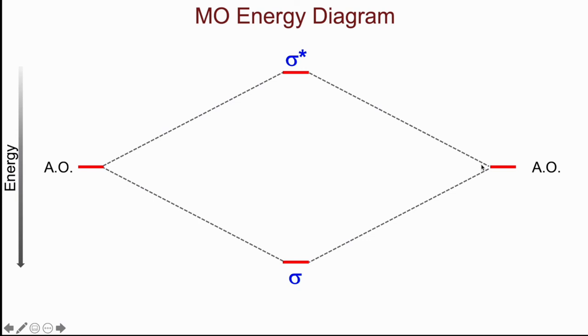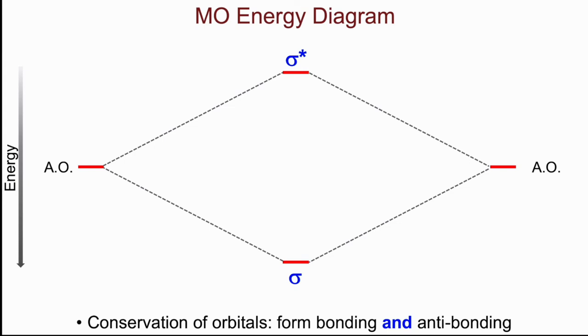They can overlap in phase to give me a bonding sigma orbital. The outer phase overlap leads to sigma star anti-bonding formation. I must form both so I conserve the number of orbitals.